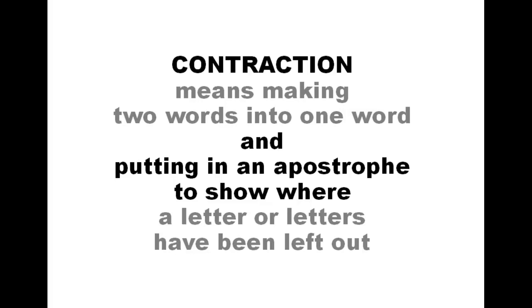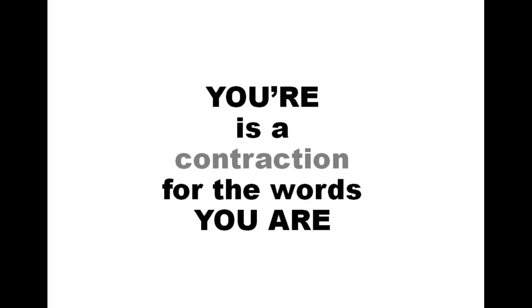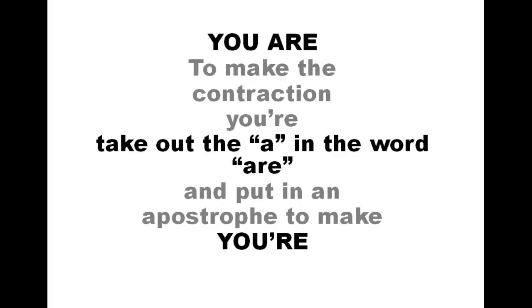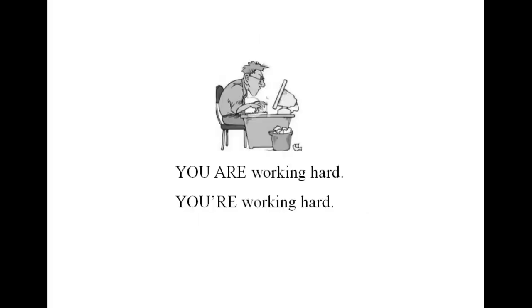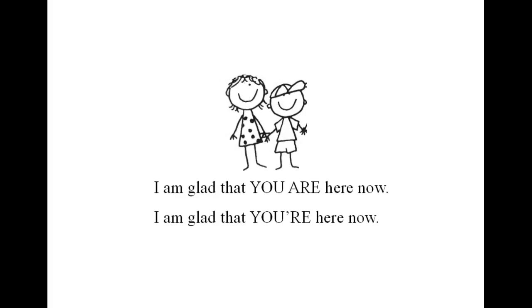You're is a contraction for the words 'you are.' To make the contraction 'you're,' take out the 'a' in the word 'are' and put in an apostrophe to make 'you're.' You're means 'you are.' You are working hard — you're working hard. I'm glad that you are here now — I'm glad that you're here now.